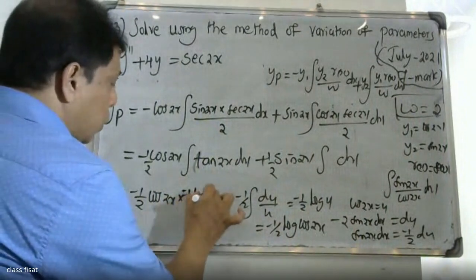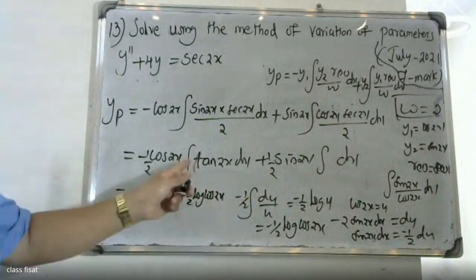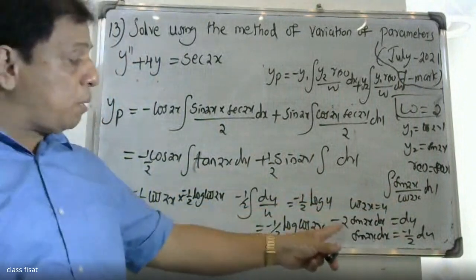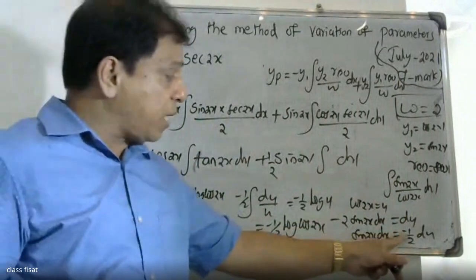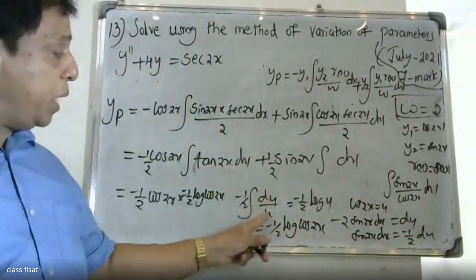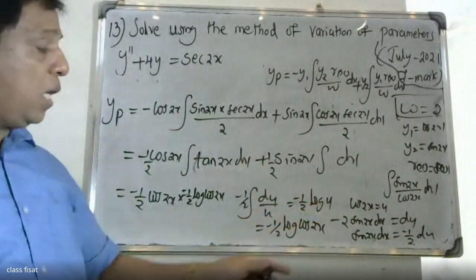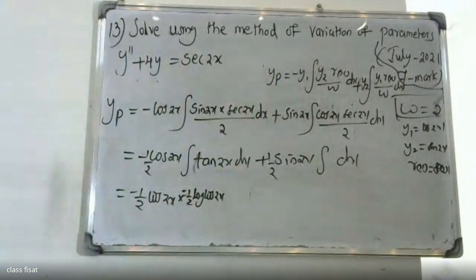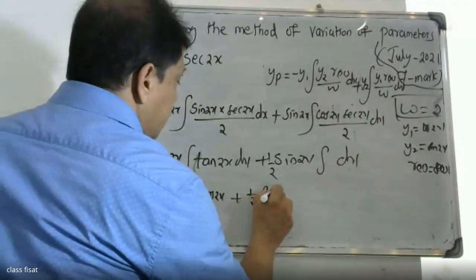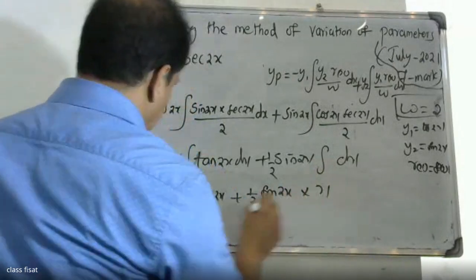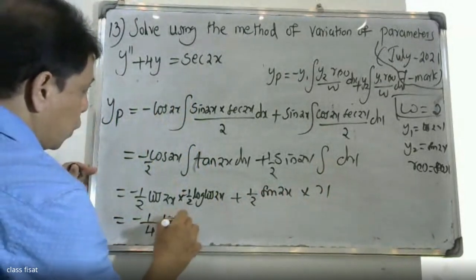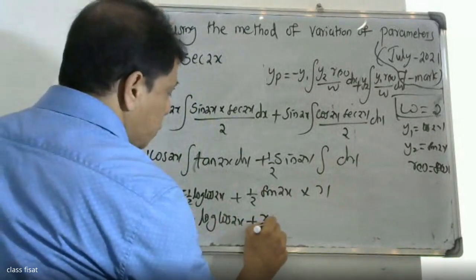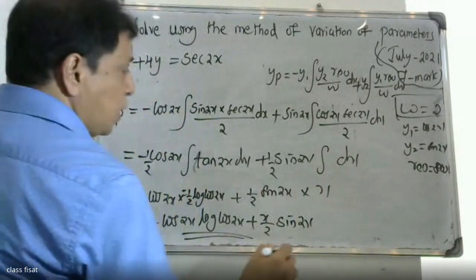Substituting back, using minus 1 by 2 log cos 2x for the integral of tan 2x, and completing the second integral, the particular solution yp is equal to minus 1 by 4 cos 2x log cos 2x plus x by 2 sin 2x.